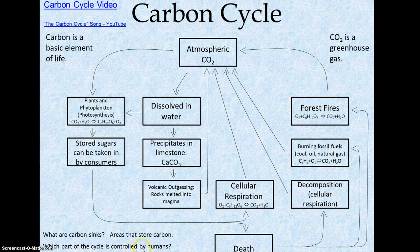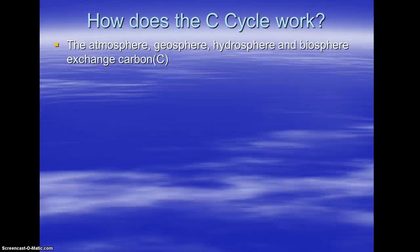Which part of the cycle is controlled by humans? Of the five ways that carbon dioxide is going into the atmosphere, we've determined that burning fossil fuels is really primarily solely a result of human activity. So how does the carbon cycle work? I do want you to write this down. This gets a little repetitive from the diagram we just went through, but I want to draw attention to these particular items because they are going to be potential test and quiz items.